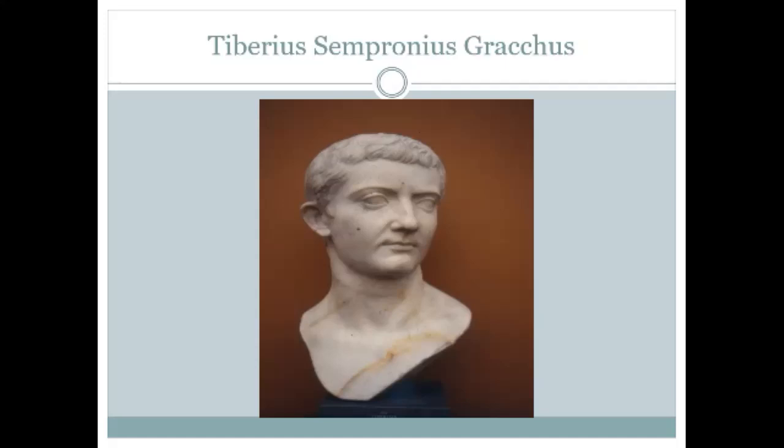Tiberius said that since Octavius was no longer acting in the interests of the people, he should resign his tribuneship. Octavius refused. Tiberius dissolved the assembly and called another assembly some days later, at which he proposed a bill to the people that would depose Marcus Octavius from his tribuneship on the argument that he was no longer a tribune of the plebs because he was acting against their interests.